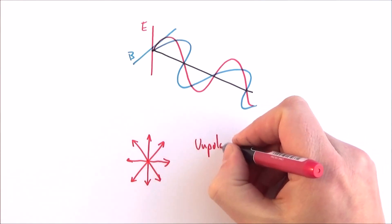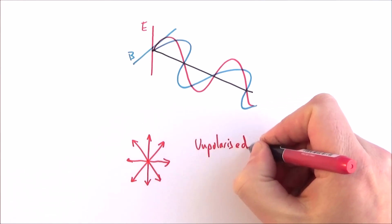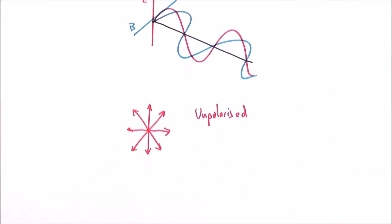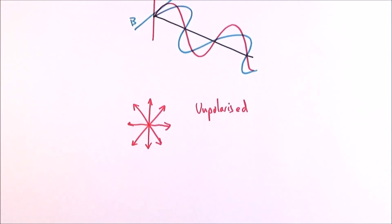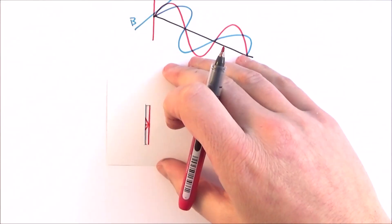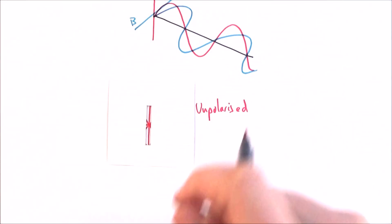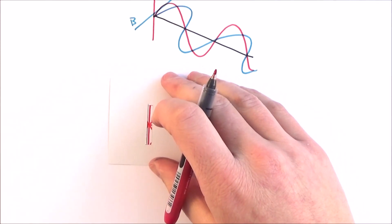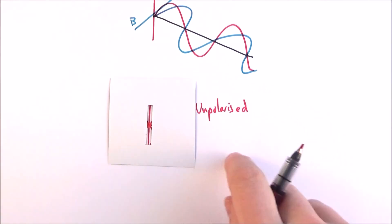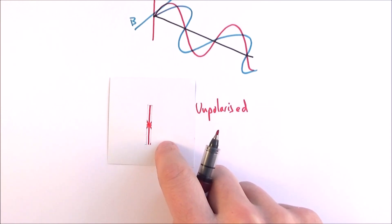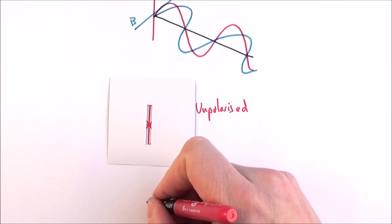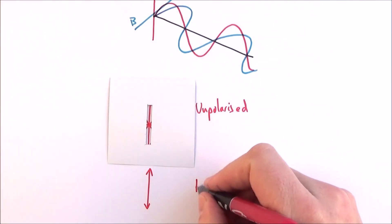This unpolarized light is like the light emitted from a light bulb or the Sun. We can apply a filter to this and start to filter out some of those vibrations. If we have a filter with only a vertical slit, that would filter out all the crossways vibrations and any light coming at an angle. What we have then is light that is plane polarized.